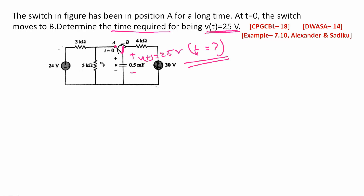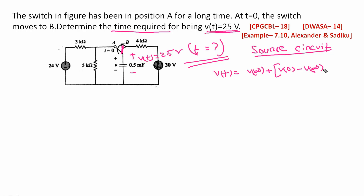Here, the source-free circuit is distinct from the source circuit. When the position is at A, the capacitor voltage V0 equals the source voltage. When the switch moves to B, we will use the source circuit equation. The source circuit equation gives us Vt, and when the source is free, the equation becomes Vt equals V0 times e to the power minus T by tau.